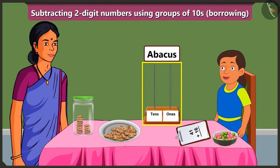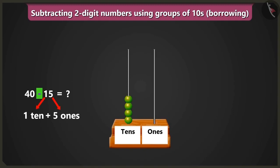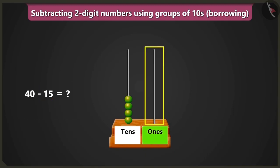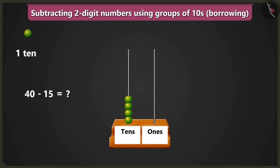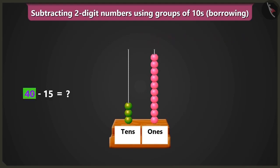Subtracting by borrowing with the help of abacus — how can we do that? Come on, let me explain. We have to subtract 15 from 40. If we put 4 beads in the box of tens, then it will be 4 tens meaning 40. Now, we have to subtract 1 ten and 5 ones from these. But there are no beads in the box of ones — so how will we subtract 15 from 40? Bubbly, we know that 1 ten means 10 ones. So, we will borrow 1 ten from 4 tens from the box of tens.